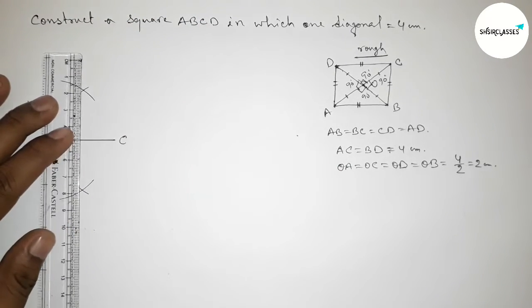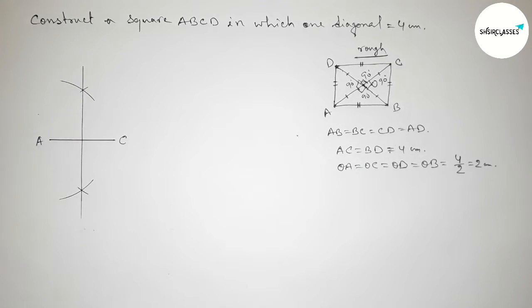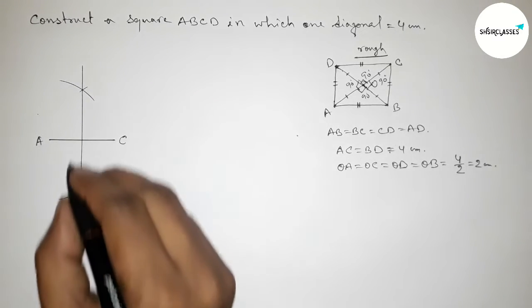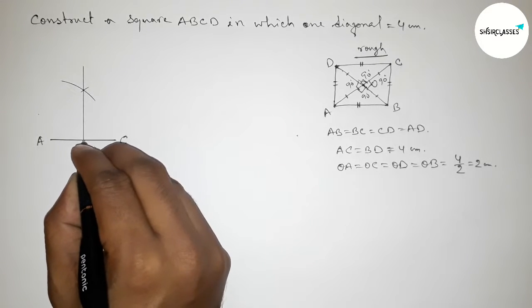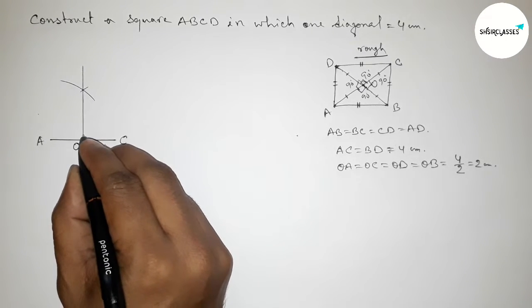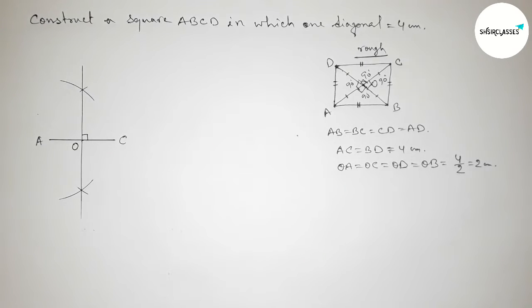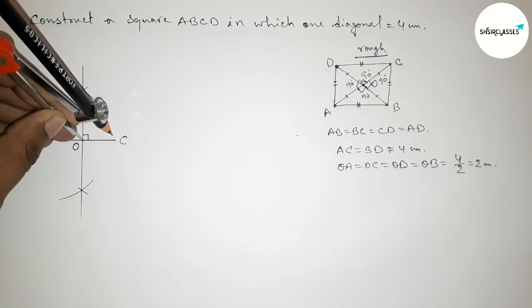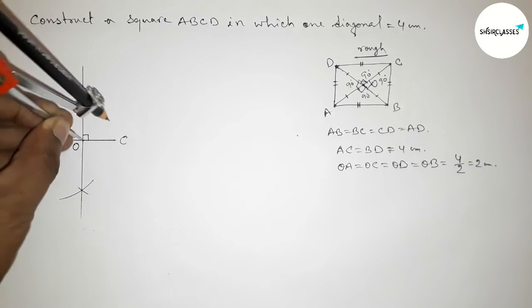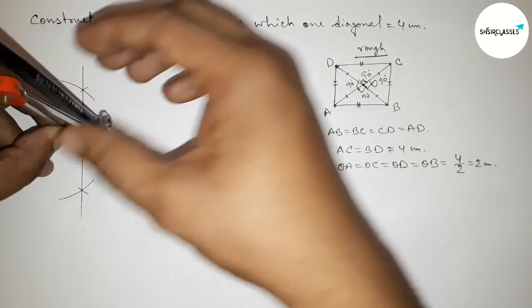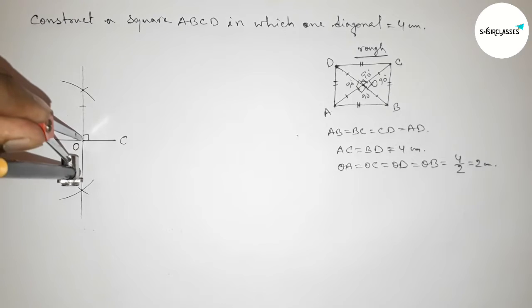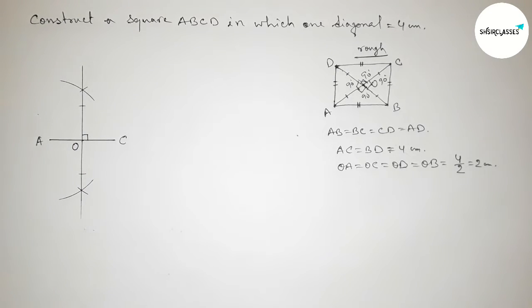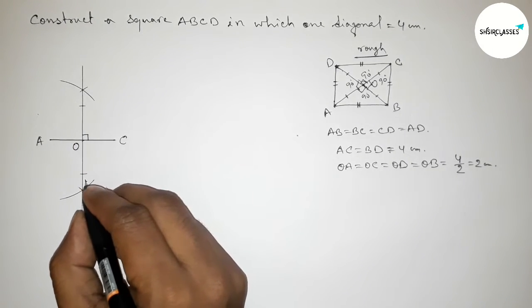So now joining this line. Okay, so the lines, both lines intersect here at a point. So now taking here point O, and this is obviously 90 degrees. Next, taking the length OA will be equal with OC. So now checking this, this is perfectly equal. So now cut here and cut here.